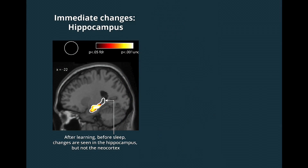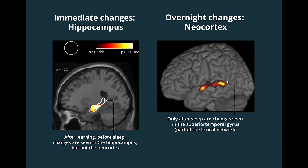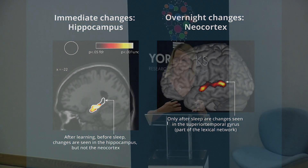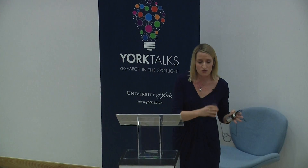Studies by Gareth Gaskell in the psychology department have shown that when you're presented with a new word, your hippocampus lights up, whereas when you're presented with a word you've already slept on — learned the previous day — you see activation in the neocortex in the superior temporal gyrus. This is further evidence that sleep is really working to shift information from this short-term store to a longer-term stable state.